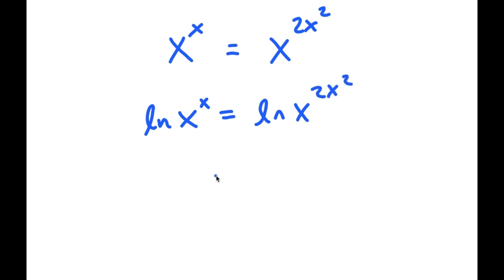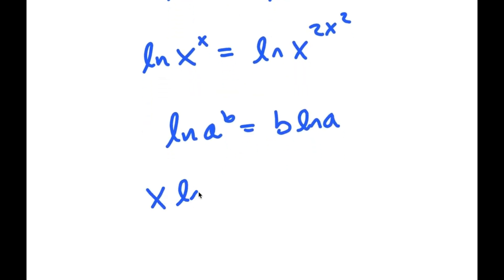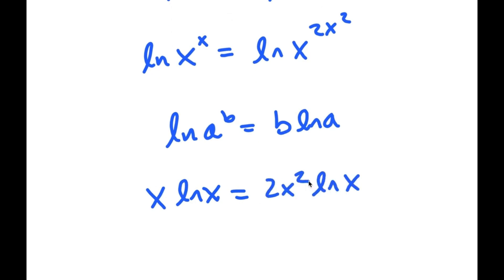If I have something in the form ln of a to the power of b, this is equal to b times ln a. So this turns out to x times ln x is equal to 2x squared times ln x.